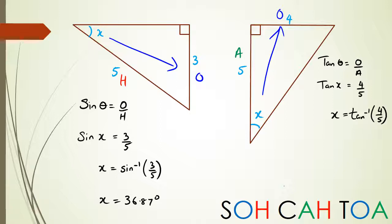So x = inverse tan of 4/5, which equals 38.66 degrees. Hopefully you got those two right. That's it for this video - if you have two sides in a right-angle triangle and you're trying to work out the angle, this is what you do. If you have any questions, pop them in the comments below and I'll try my best to get back to you. Thanks for watching!